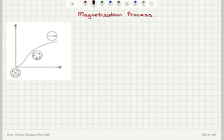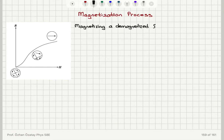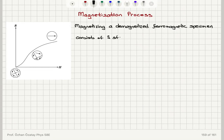Now we'll talk about the process of magnetizing a demagnetized ferromagnetic specimen, and this consists of three stages that we will talk about in detail. First thing to note is that magnetizing a demagnetized ferromagnetic specimen consists of three stages. First, we will talk about the process that is happening at low fields — what is happening at low fields to the demagnetized specimen.